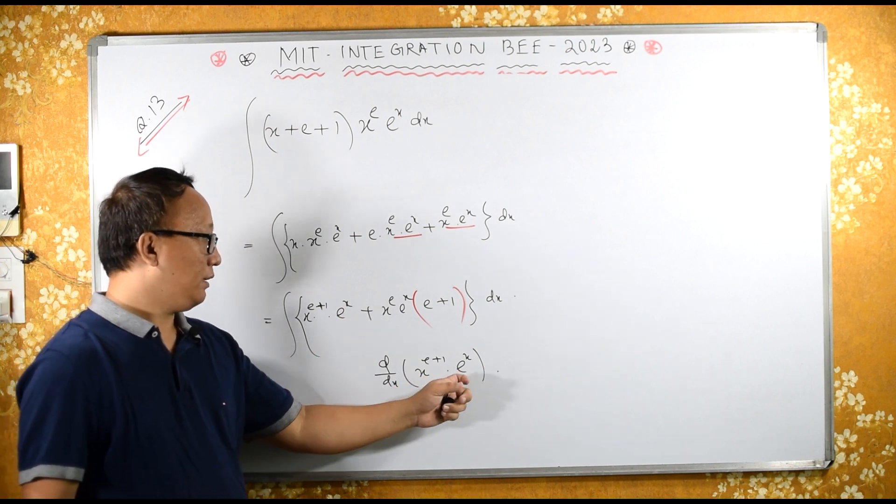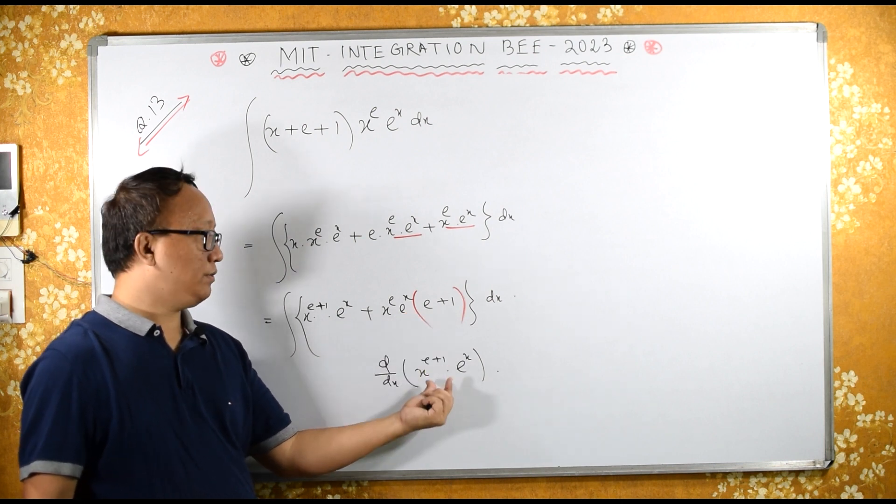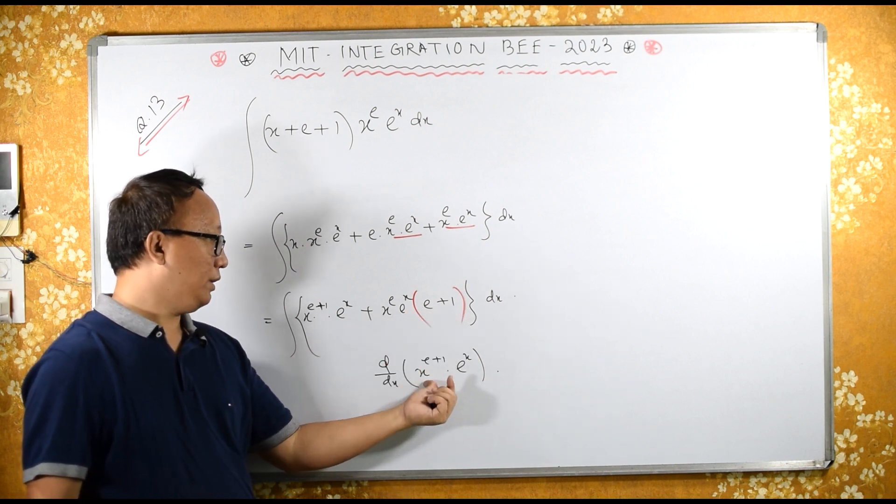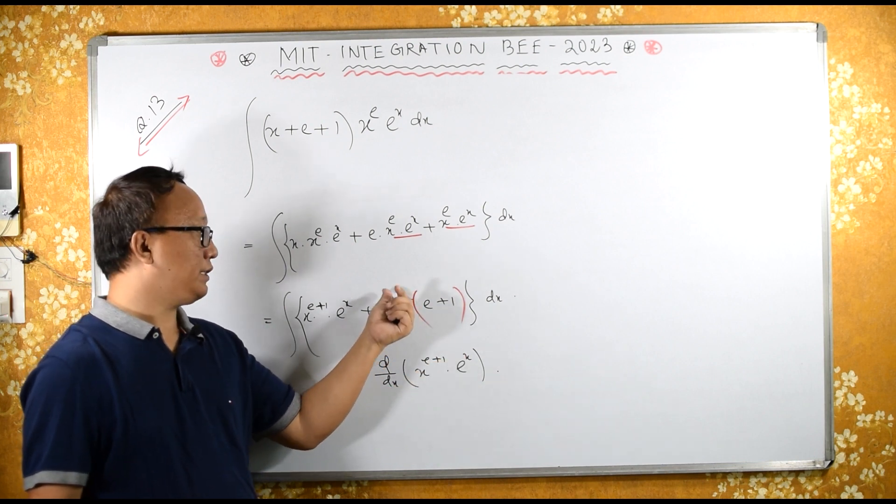Now keep as it is e raise to x, differentiation of x raise to e plus 1 is e plus 1 into x raise to e plus 1 minus 1, and plus 1 minus 1 is x raise to e.